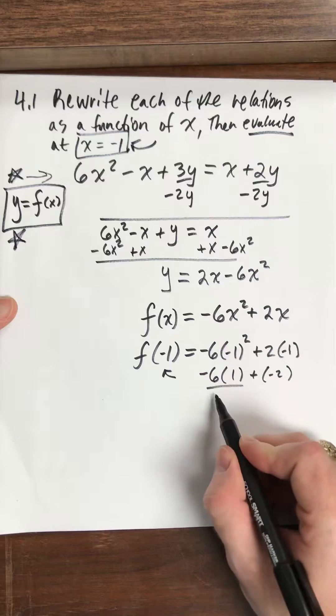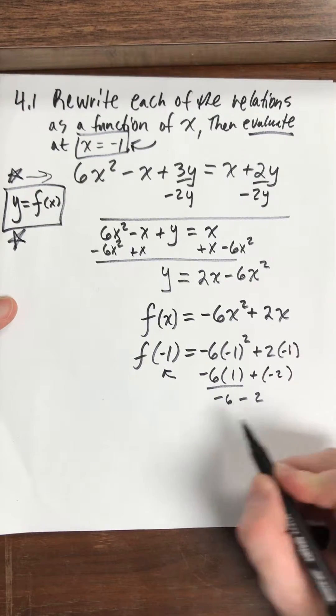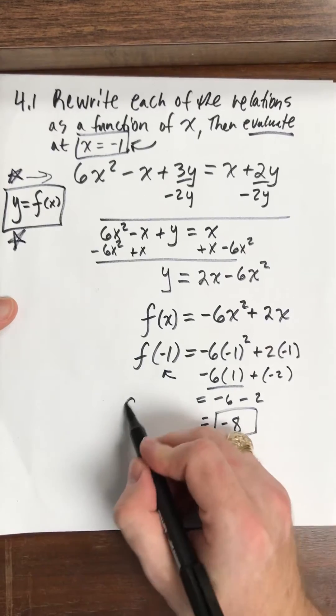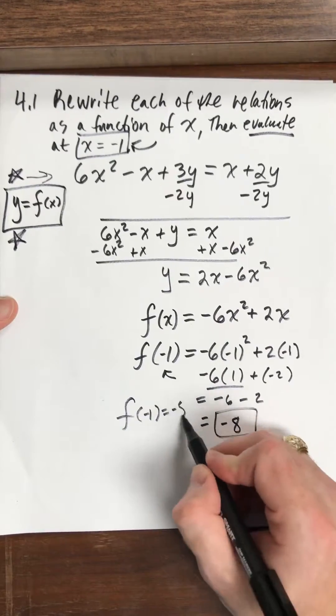Alright? So this becomes negative 6 and then minus 2. And that gives us negative 8. So f of negative 1 is negative 8.